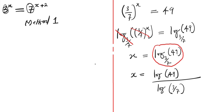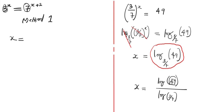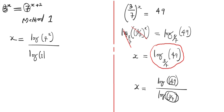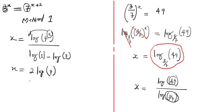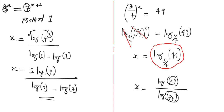Continuing here, we have x equals log of 49 — and 49 is the same as 7 raised to the power of 2 — divided by log of 3 over 7, which can be written as log 3 minus log 7. So we have x equals 2 times log of 7 over (log 3 minus log 7). If you plug these values into your calculator, you have the final answer. Note: if you make use of natural log, you won't be able to plug the values into your calculator, so that's why we use log here.